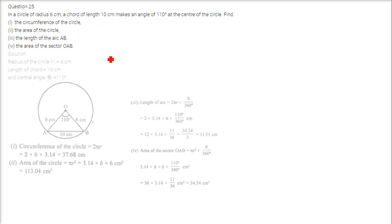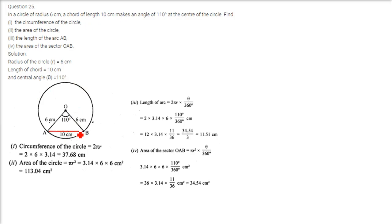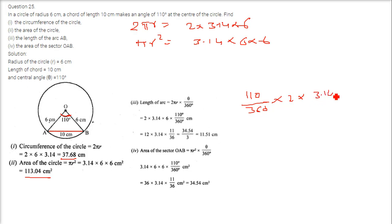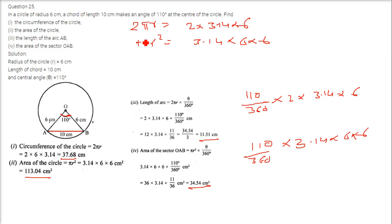In a circle of radius 6 cm, a chord of 10 cm makes an angle of 110 degrees at the center. The circumference is 2πr = 2 × 3.14 × 6 = 37.68 cm. The area of the circle is πr² = 3.14 × 6 × 6 = 113.04 cm². The arc length is (110/360) × 2 × 3.14 × 6 = 11.51 cm, and the area of the sector is (110/360) × 3.14 × 36 = 34.54 cm².